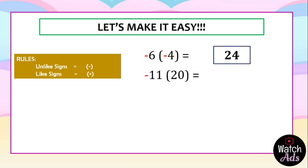For our next example: negative 11 multiplied by 20. Since 11 is negative and 20 is positive, they are automatically unlike signs, so the final answer is always negative. We multiply 11 and 20 — the answer is negative 220.